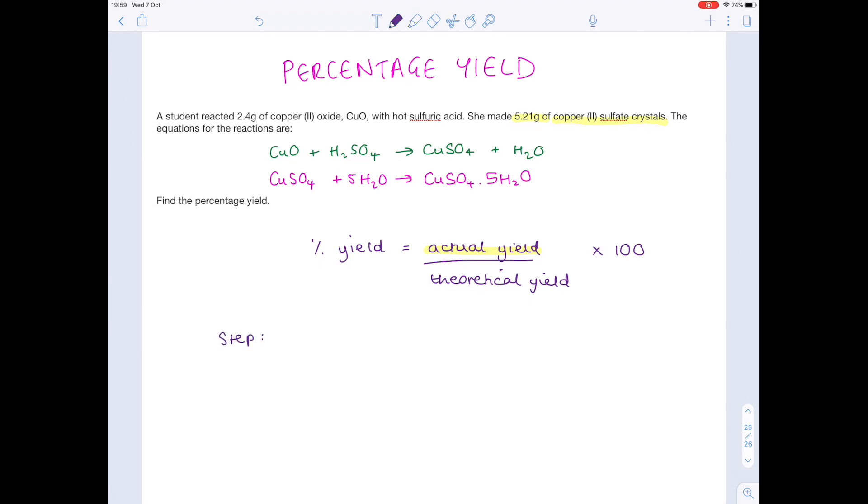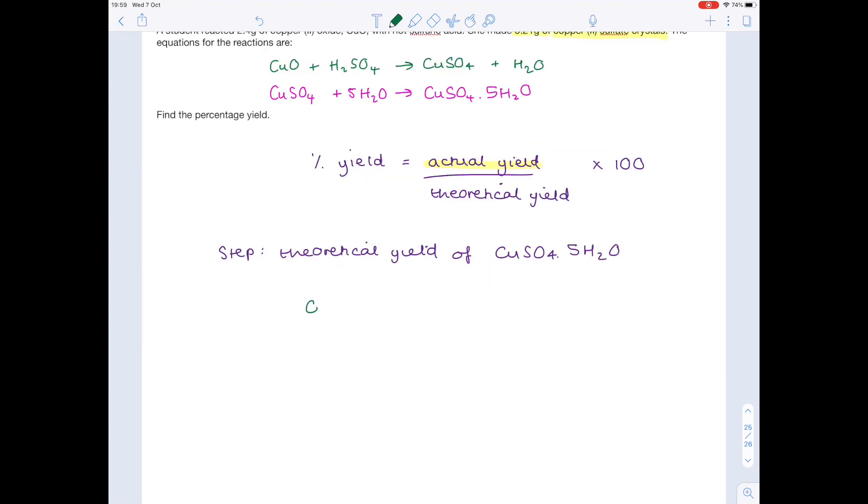Really, our first step is to find the theoretical yield of the copper(II) sulfate crystals, which is CuSO4·5H2O, and this is how we're going to go about it. Start by writing out your first equation. I do think it's important that you do this so that you don't have any copying mistakes and you can see exactly what's going on.